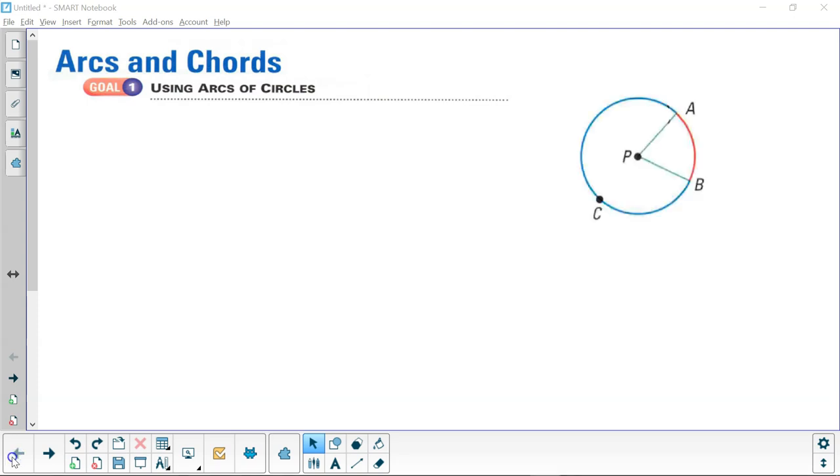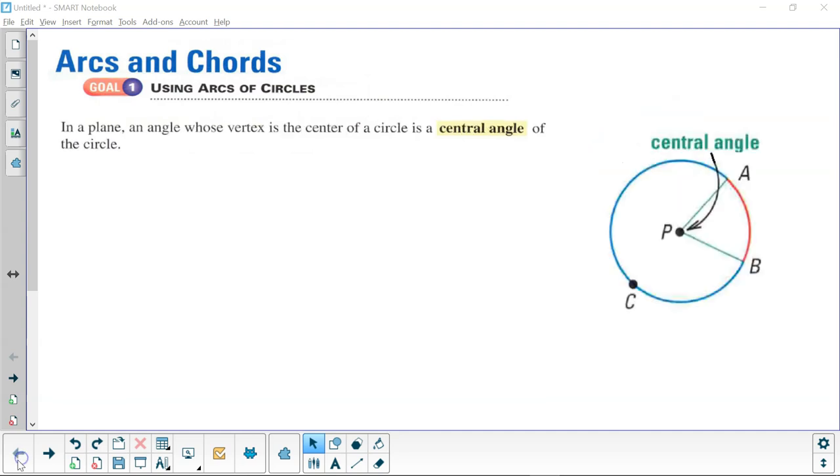Here we have a diagram with center point P. We also have points A, B, and C. Notice that points A, P, and B form a central angle. It's called a central angle because the vertex is the center of the circle.